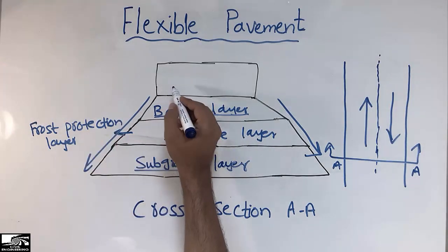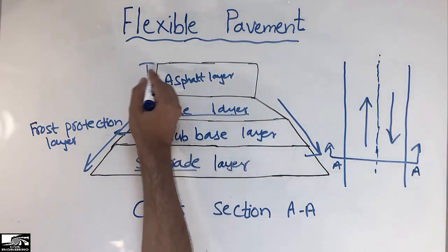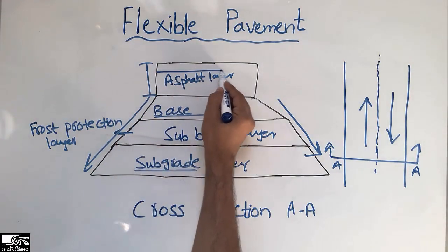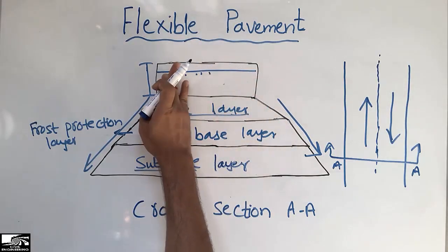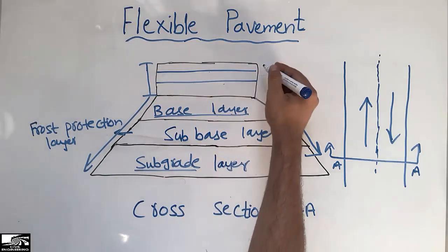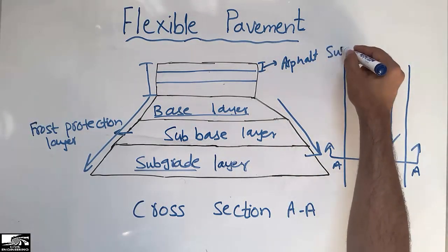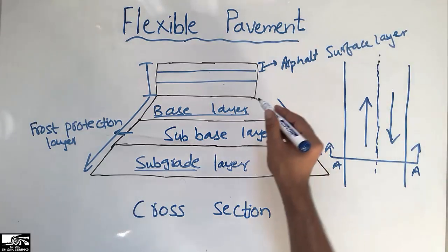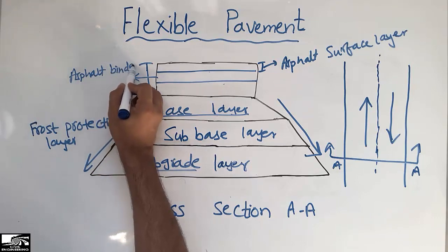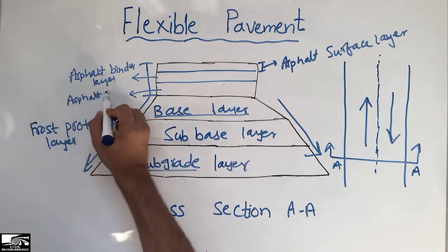On top of the base layer we have the asphalt layer. The entire top portion is known as the asphalt layer, but it is further classified into three different layers: the first is the asphalt surface layer, the second is the asphalt binder layer, and the third is the asphalt base course.